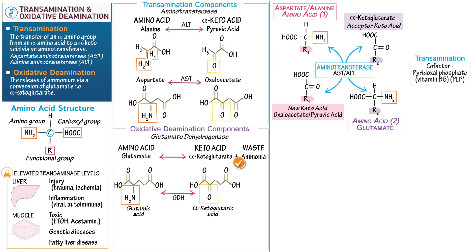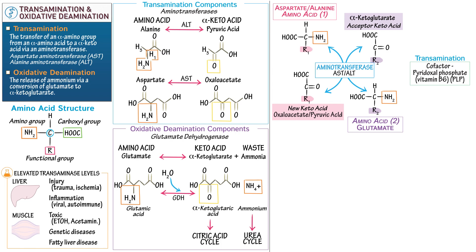Next, show alpha-ketoglutarate, which is the product of glutamate after oxygen is added — after it's oxidized — and the amino group is removed, hence oxidative deamination. It's a slightly larger keto acid than oxaloacetate found in the transamination reaction. Water provides the oxygen and hydrogen necessary to oxidize alpha-ketoglutarate and protonate ammonia to ammonium. We show ammonia in its charged state as ammonium, because this is how it typically exists at physiologic pH, rather than in its uncharged state.